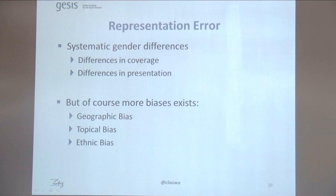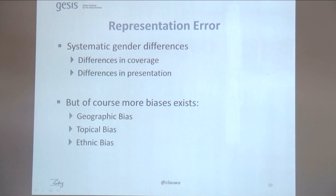Summarizing, there is a bias in Wikipedia — a representation error or bias with respect to gender — with differences in coverage and presentation. There are also many more biases: geographic bias, topical bias, and ethnic biases. This is relevant for this community because these data collections are often used to extract knowledge graphs, and these biases are then present in the extracted knowledge. It's also important because we often train automated measurement methods on these data collections, and if there is a bias in the data collection, there will be a bias in the measurement.